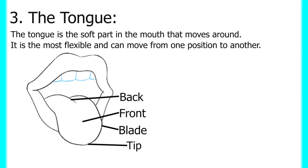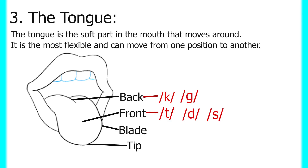For example, the front part of the tongue is used to produce sounds like 't,' 'd,' and 's.' You find that the front part of your tongue is raised when producing these sounds. The back part of the tongue is used to produce sounds like 'k,' 'g,' and 'ng.' You feel the strain at the back of the tongue when you produce those sounds. So the tongue is the most important articulator in English.